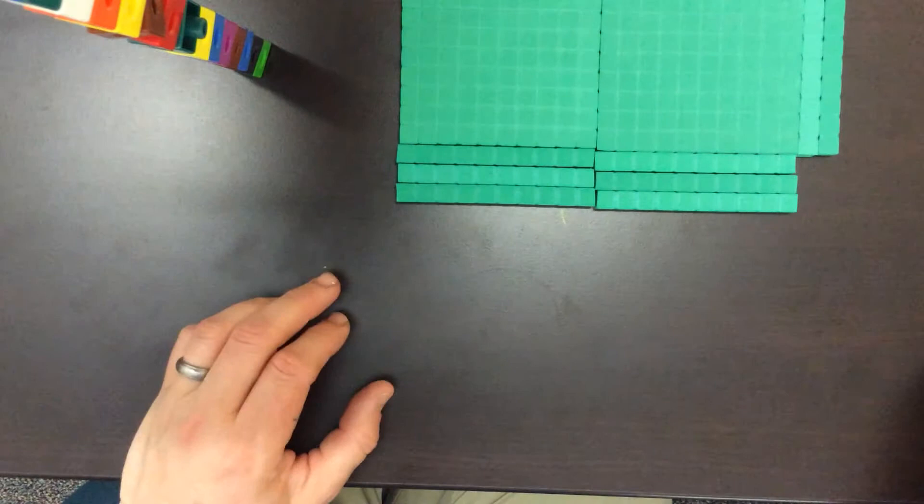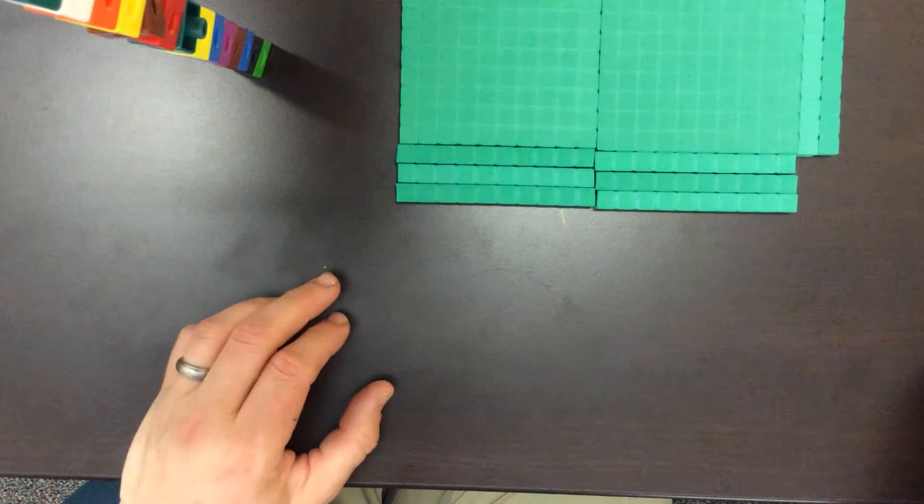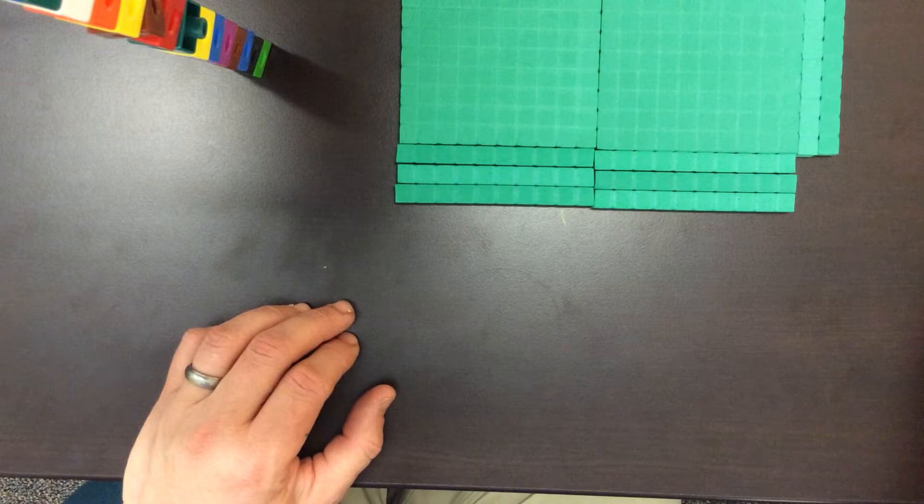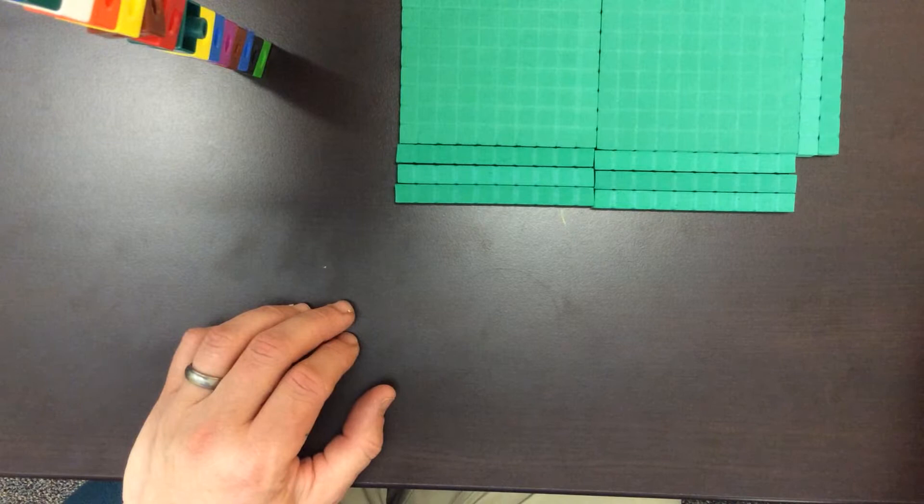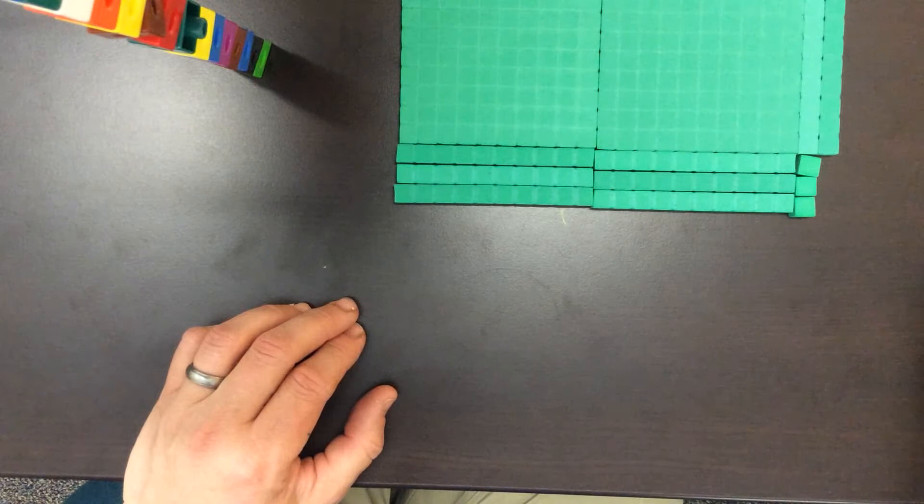Now what we realize though is we don't have enough to be able to create a perfect rectangle, but we do know that we have parts of a whole that we can use. In this situation we're going to use hundredths. So we've got three hundredths that we can add there and another three hundredths that we can add there. And now we've formed our perfect rectangular array.